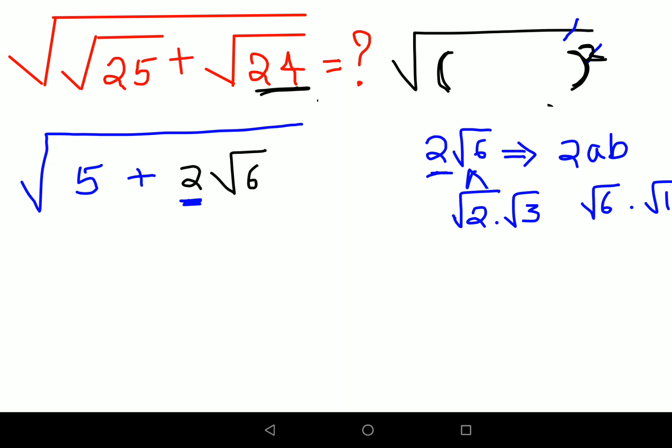Now your job is what, it should look like this. So this becomes your a, this becomes your b. So if you put it in the factorized form of a square plus 2ab plus b square, it should look like root 2 the whole square plus 2 into root 2 into root 3 plus root 3 the whole square. It should look something like this.